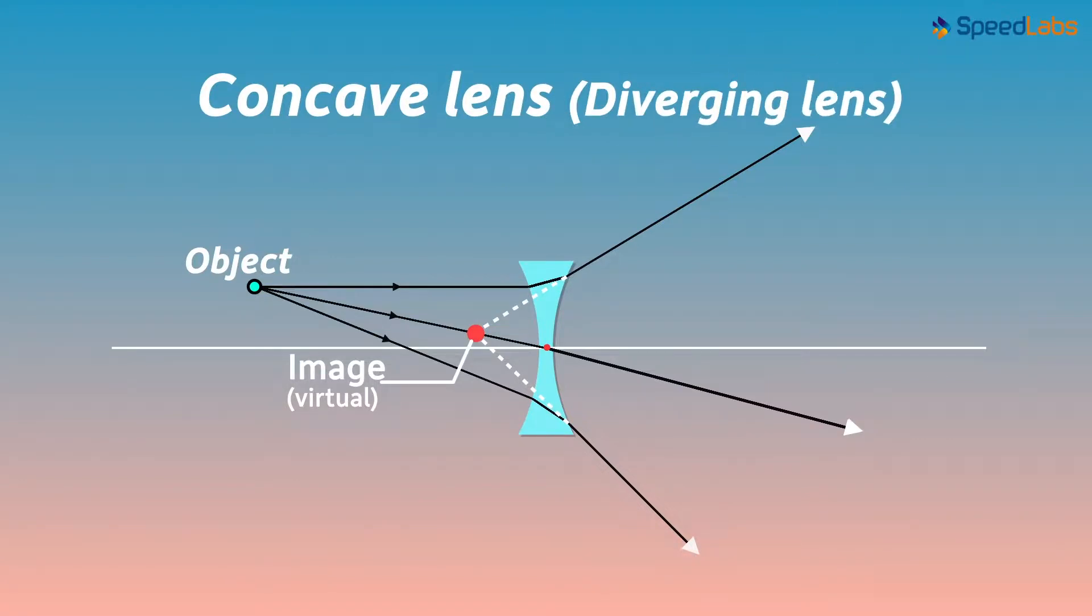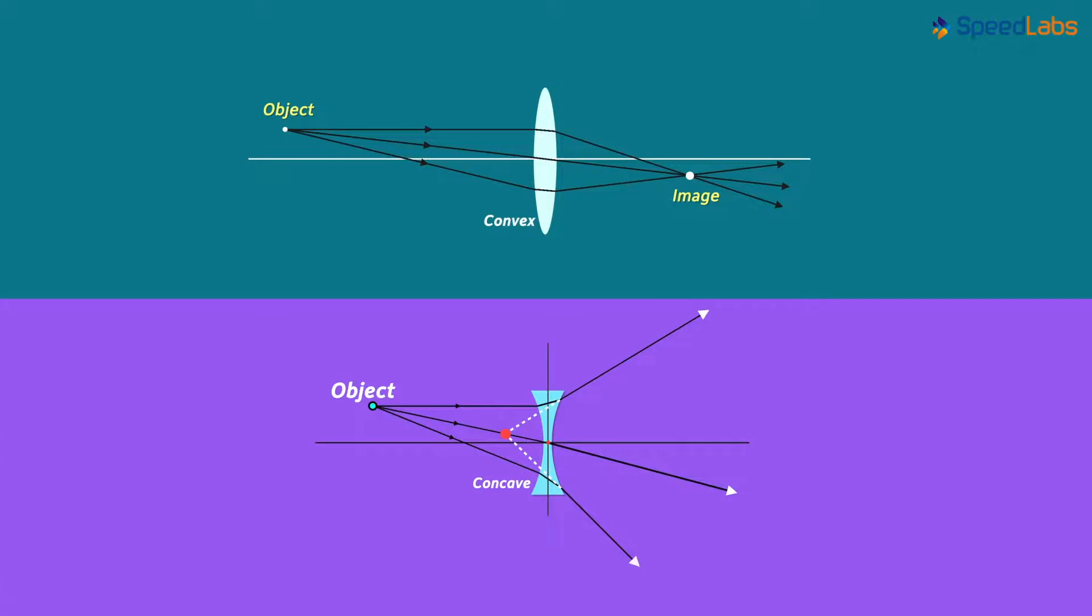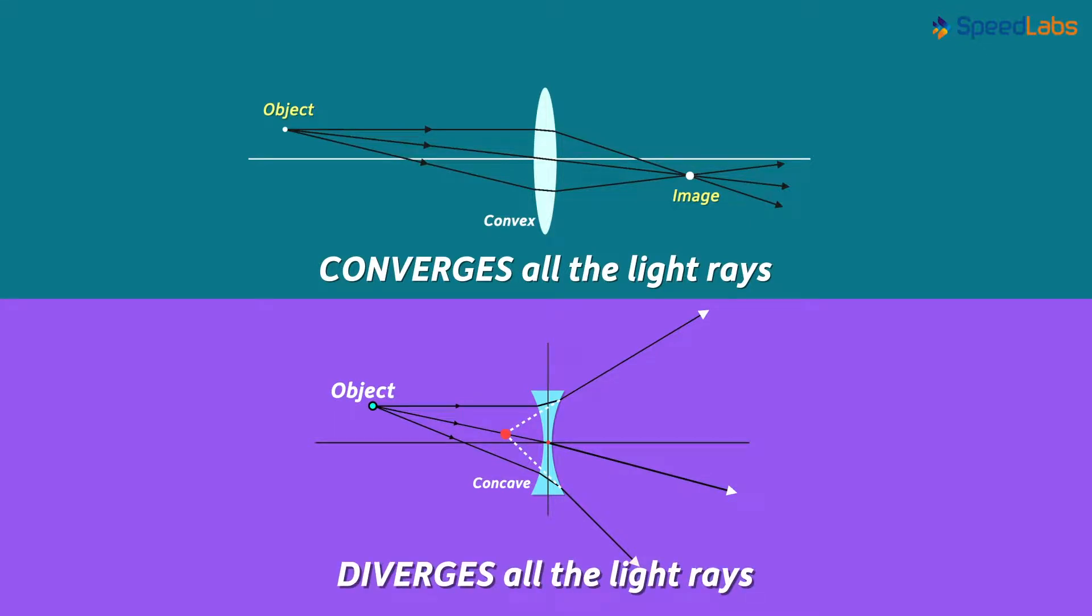Now let's look at both the lenses side by side. So the convex lens converges all the light rays from a point object, and the concave lens diverges all the light rays from a point object.